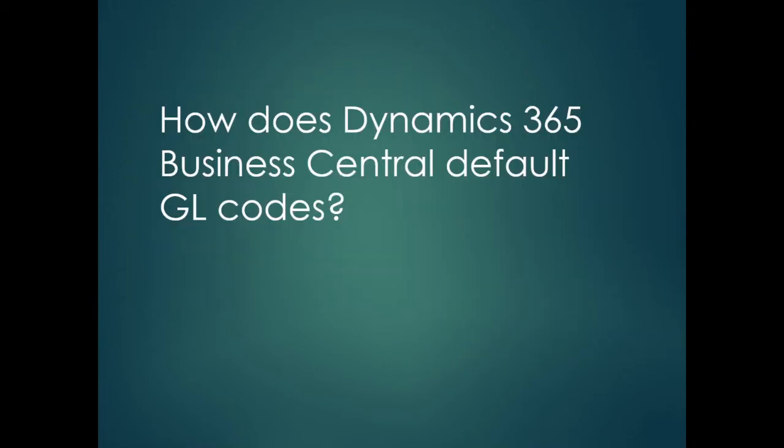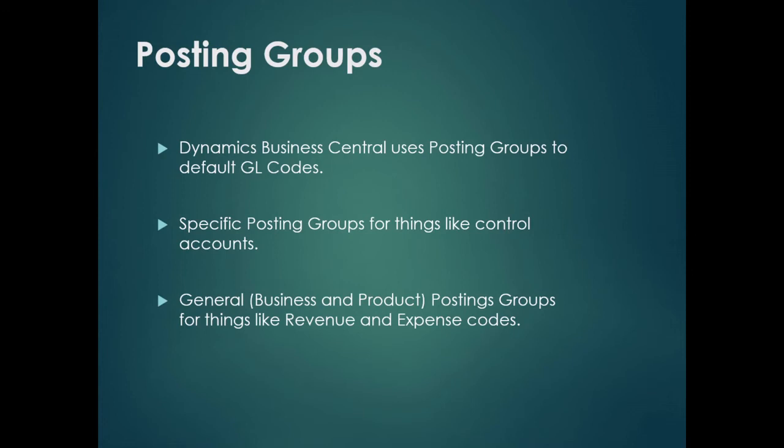Now we've covered how GP defaults GL codes, let's move on to how Dynamics 365 Business Central defaults GL codes. It uses something called posting groups and there are different types: there are specific posting groups for things like control accounts such as accounts receivable and accounts payable, and then there are general posting groups split into business general posting groups and product general posting groups, which are for things like revenue codes and expense codes.